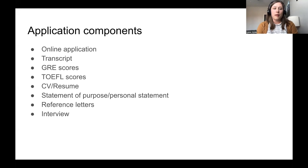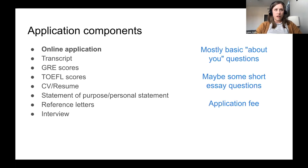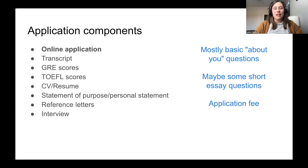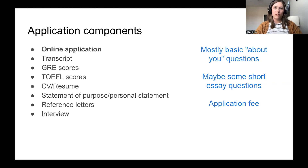In a typical grad school application, these are the main components. Most schools have an online application form covering basic questions: your name, where you went to school, and so on. Some schools include short essay questions, which really varies by school. Most schools also have an application fee, and sometimes that fee is not small, so keep track of those costs — applying to graduate school can get expensive. Some schools are waiving fees this year, and most have a waiver process for financial need.